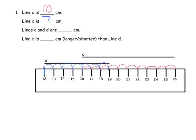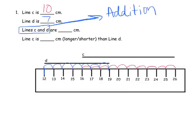And then it says lines C and D. So I don't really like the way they're asking this question because they're suggesting addition. It's not really totally obvious, but we're going to say lines C and D. So we're going to use the word 'and' to suggest that we're supposed to add. So 10 plus 7 is 17.